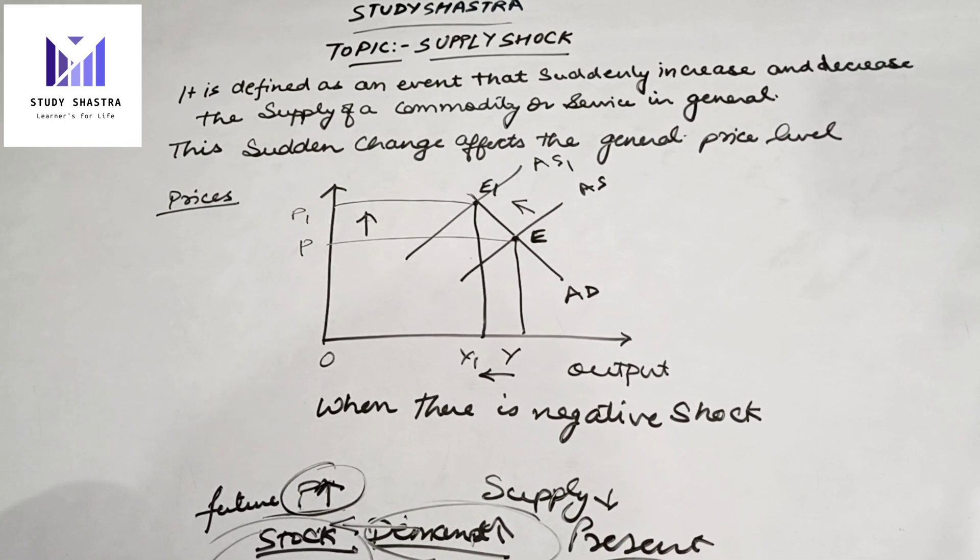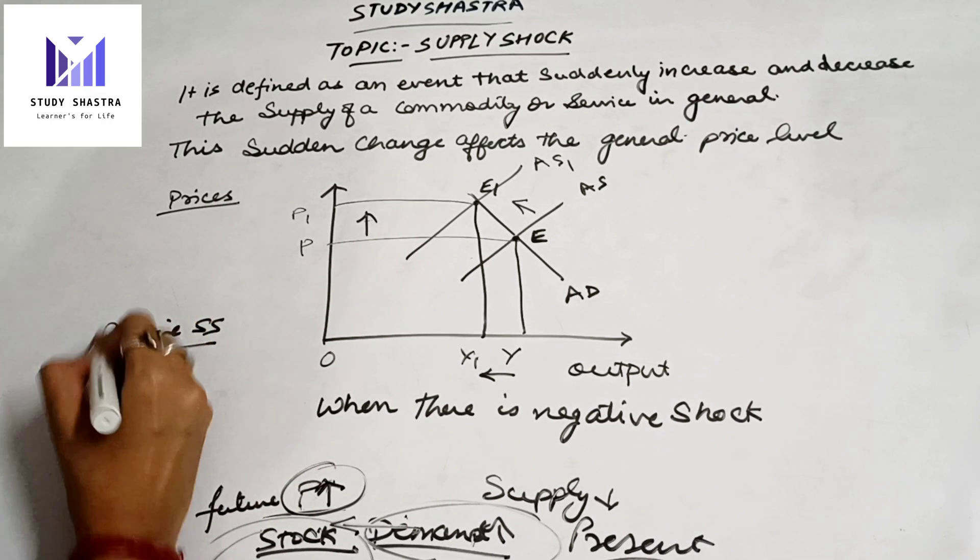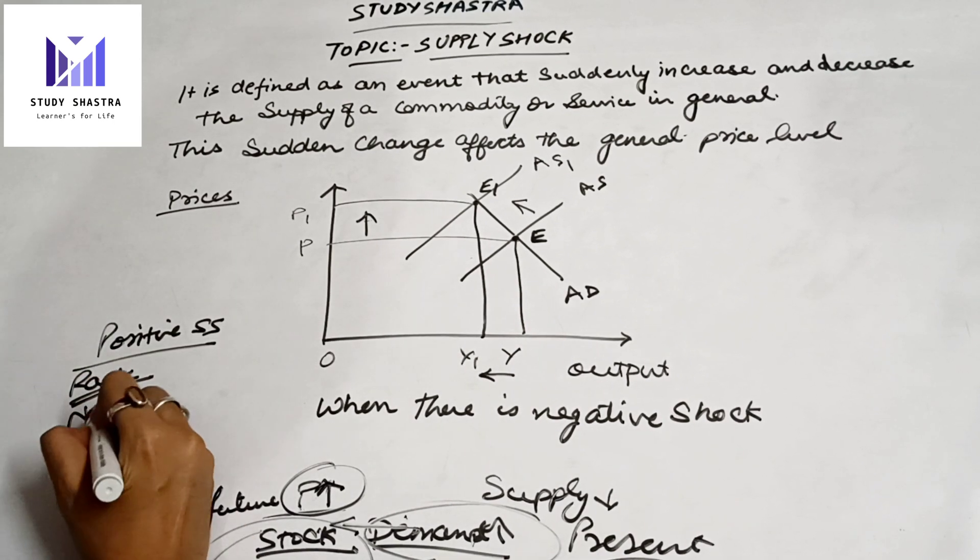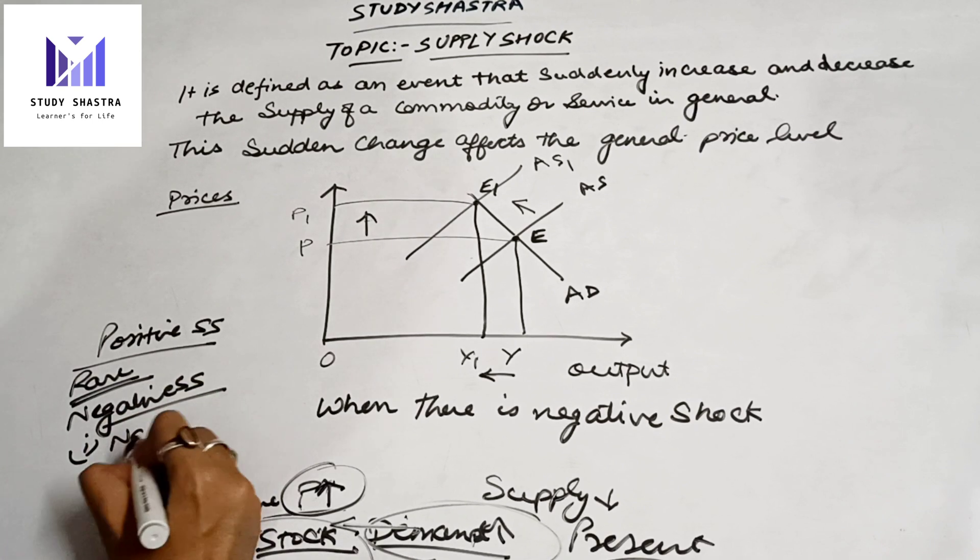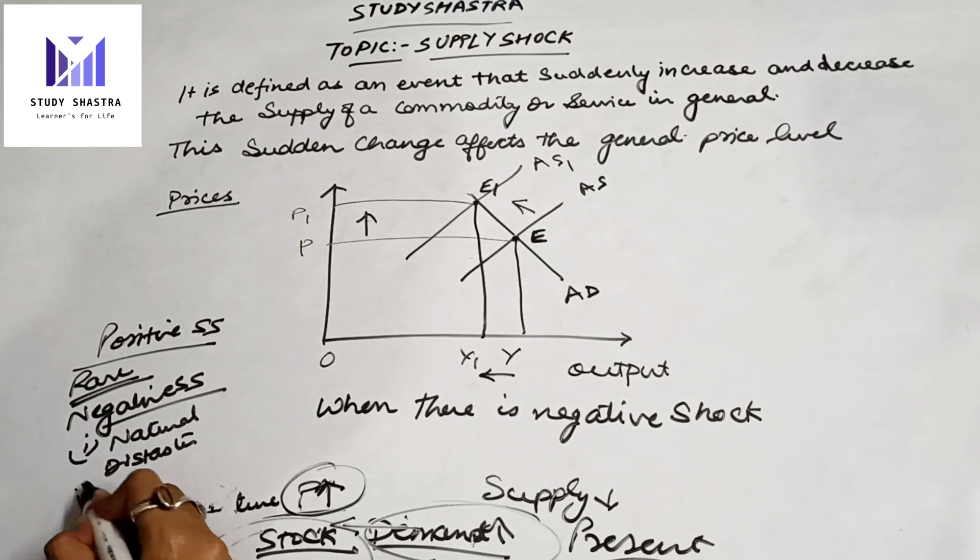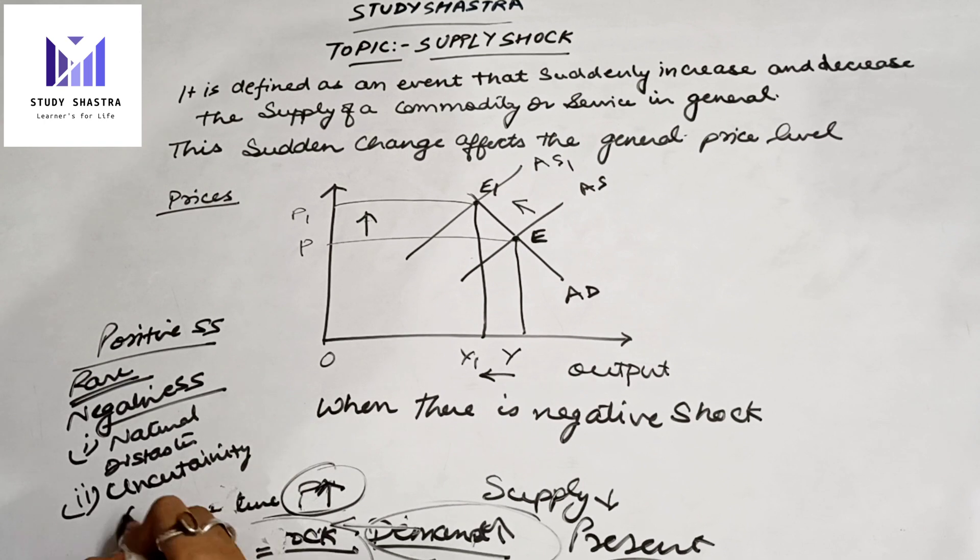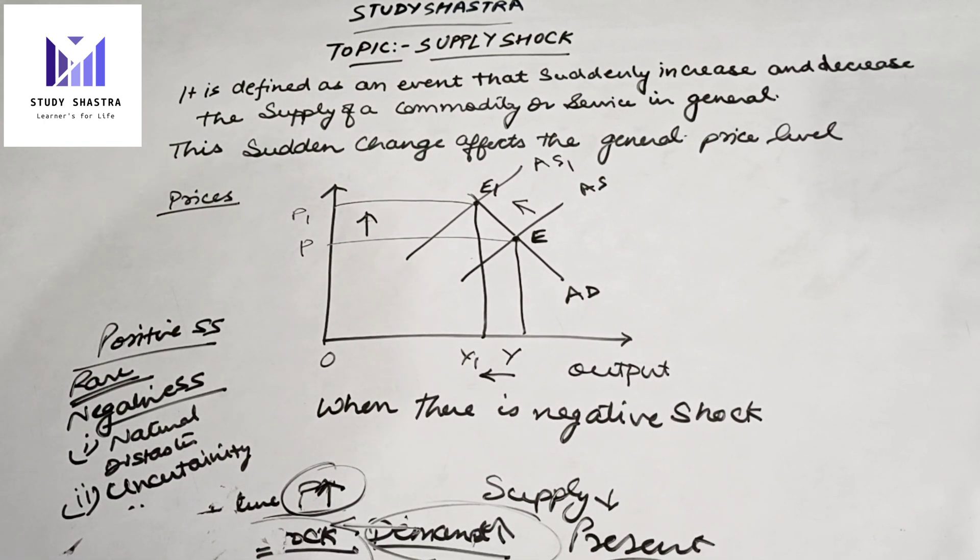There are two types of supply shocks in the market economy: positive and negative. Positive supply shock is very rare, whereas negative supply shock occurs when there is a natural disaster or uncertainty. This uncertainty is very common nowadays due to COVID, so we can say that uncertainty is also a factor.